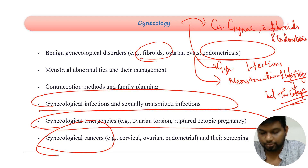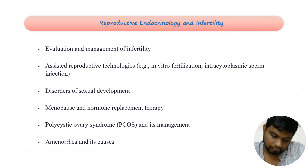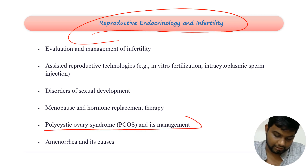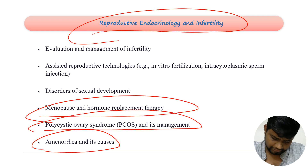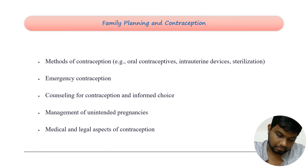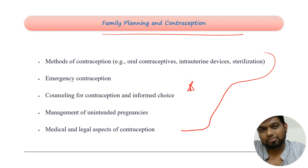In reproductive endocrinology and infertility, the high-yield areas include PCOD, amenorrhea, menopause, and disorders of sexual development — do not miss any of these. Family planning and contraception is also fully important: all methods, emergency contraception, counseling, intrauterine devices, management of unintended pregnancy, and MTPs. Everything related to contraception is important as you can expect at least one question on it.